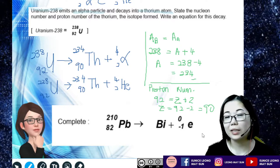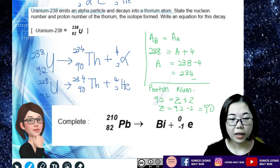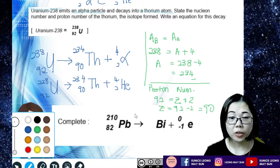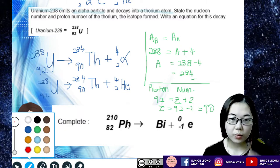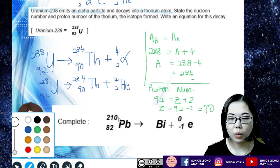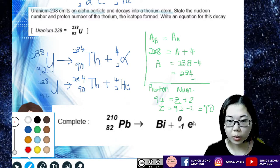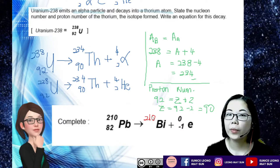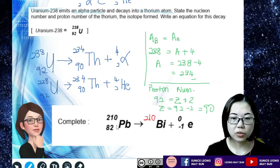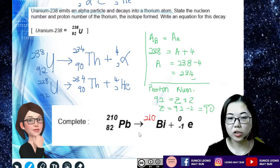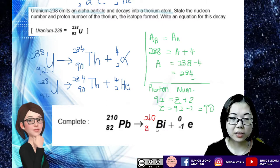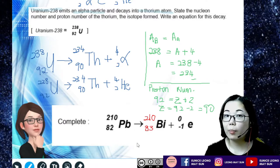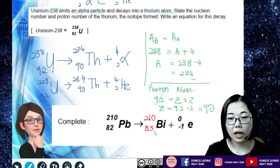The second part says to complete this particular equation. We're going to balance the nuclear number first. Before the reaction is 210, it becomes bismuth, and here we have an electron whose nuclear number is 0. So bismuth's nuclear number will be 210 as well. For plumbum the proton number is 82, and for the electron it's negative 1. To balance negative 1, we add plus 1, giving 82 plus 1 equals 83. Checking: before decay is 82, after decay is 83 minus 1 equals 82. Balanced.